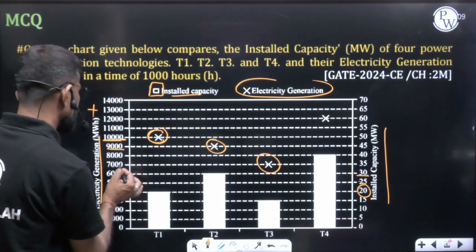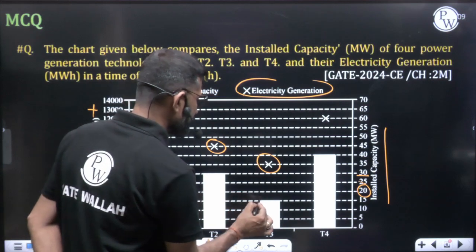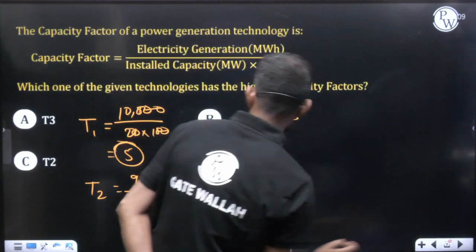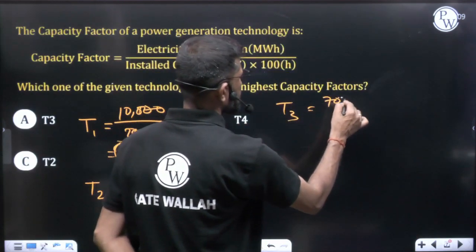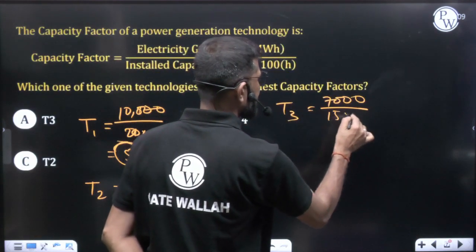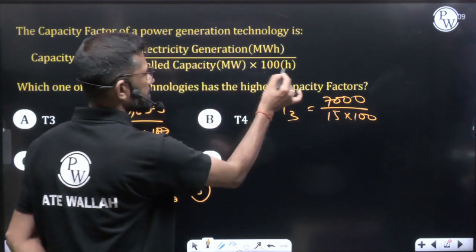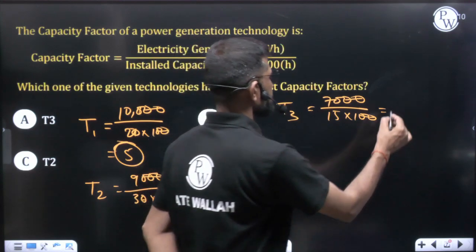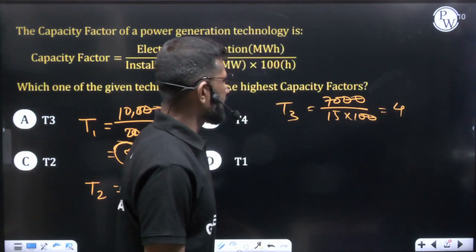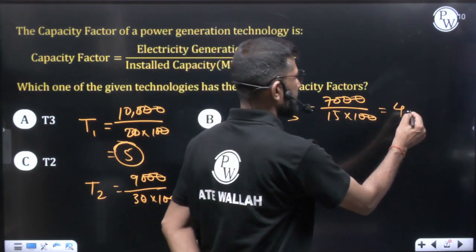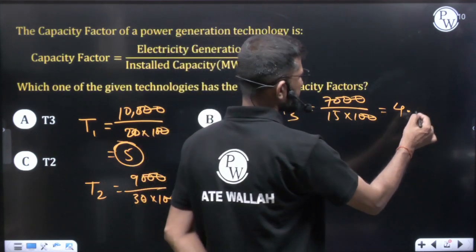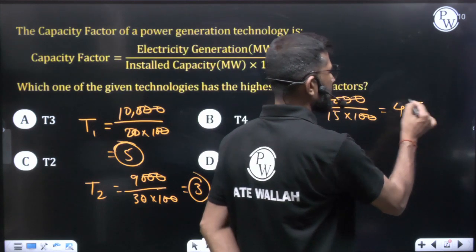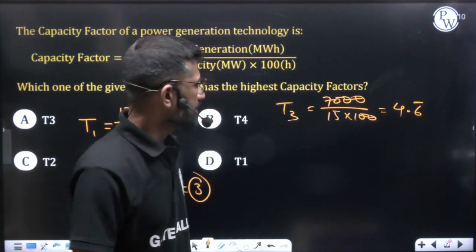For technology T3: electricity generation is 7,000 MWh, and installed capacity is 15 MW. So capacity factor = 7,000 divided by 15, multiplied by 100. After cancelling zeros, this becomes 70 divided by 15, which equals 46.6̄ (or 4 and 2/3 repeating) for T3.